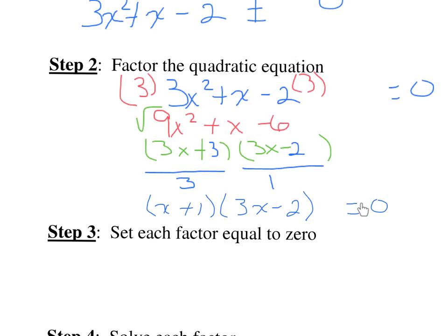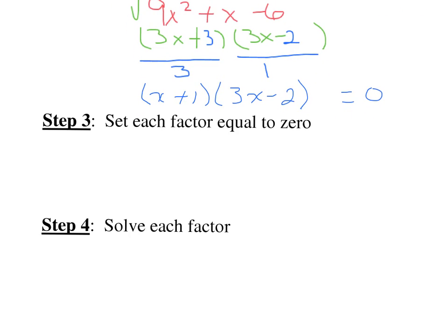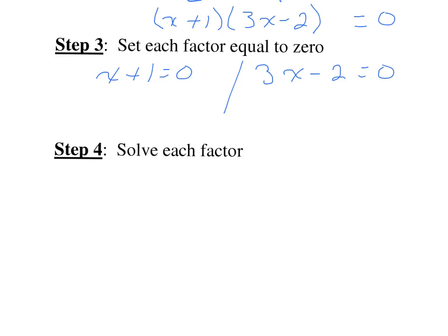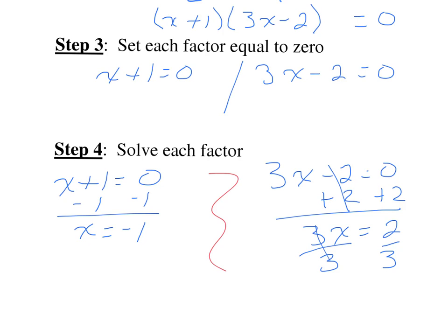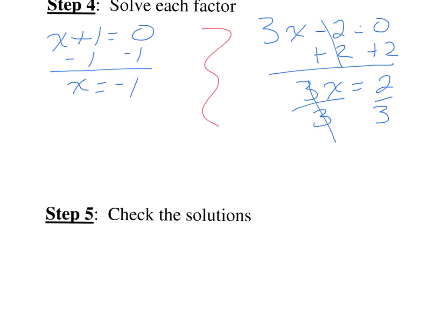The next step is to set each factor equal to zero using the zero product property. If x plus 1 times 3x minus 2 equals zero, then x plus 1 equals zero and 3x minus 2 equals zero. Solving the first: subtract 1 from both sides gives x equals negative 1. Solving the second: add 2 to both sides gives 3x equals 2, then divide by 3 gives x equals 2 thirds. Check both solutions by substituting into the original equation. The solutions are x equals negative 1 and x equals 2 thirds.